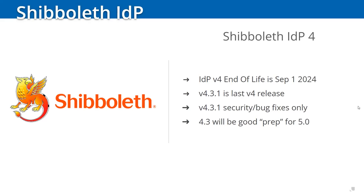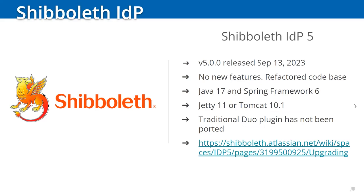The biggest news is IDP 5, released just September 13th. This initial release has no new features — it is a refactored code base with an upgrade to Java 17 and Spring Framework 6.0. Upgrading to IDP 5 also requires upgrading to Jetty 11 or Tomcat 10.1 at a minimum, due to the Jakarta Servlet specification that IDP 5 requires.